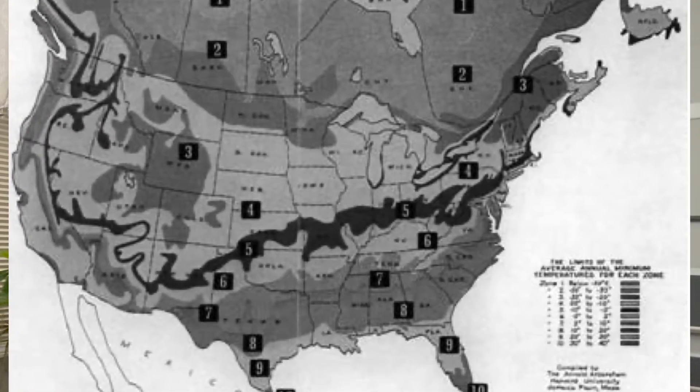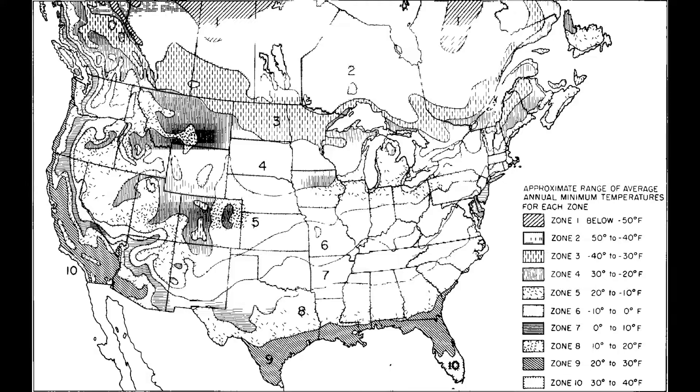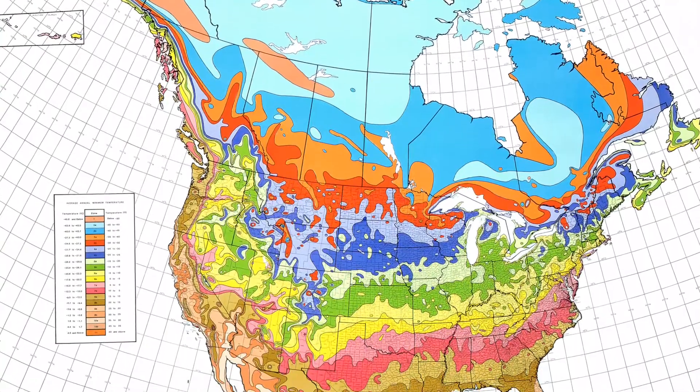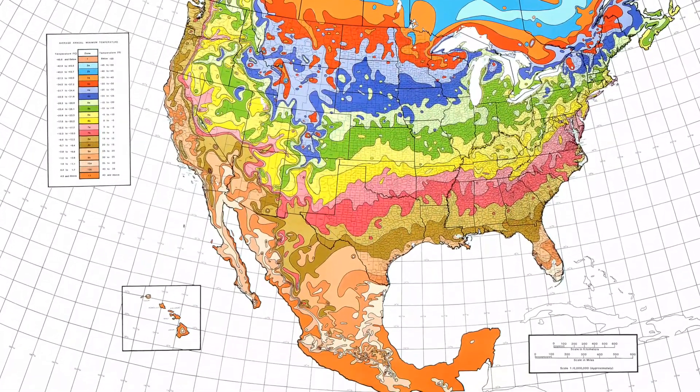His map eventually became obsolete as the USDA got into the act. In 1960, the USDA published their own map using data from 450 weather stations around the country. However, since they used different criteria than Wyman, the two maps conflicted, ultimately leading to the USDA's map taking over. By 1990, the USDA had updated their map with data from up to 15,000 weather stations and partnered with the U.S. National Arboretum. Over time, as more data came in, these maps became more accurate and led to 13 distinguished zones from Alaska all the way down to Puerto Rico.